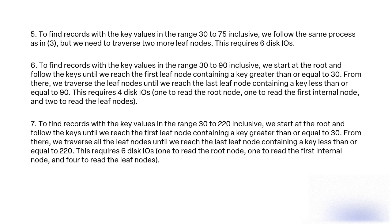Query 7: To find records with key values in the range 30 to 220 inclusive, we start at the root and follow the keys until we reach the first leaf node containing a key greater than or equal to 30. From there, we traverse all the leaf nodes until we reach the last leaf node containing a key less than or equal to 220. This requires 6 disk I/Os: 1 to read the root node, 1 to read the first internal node, and 4 to read the leaf nodes.